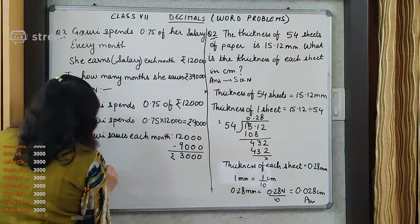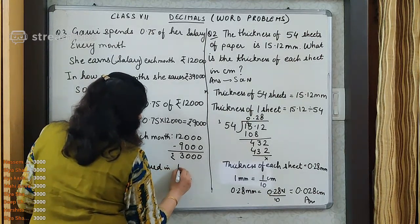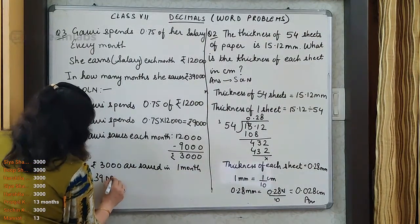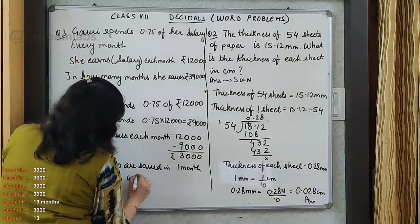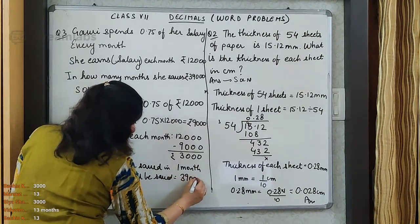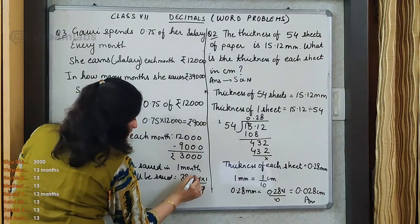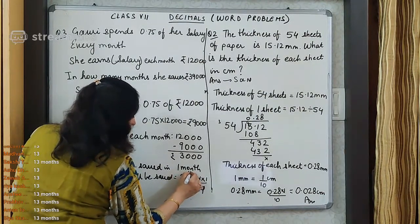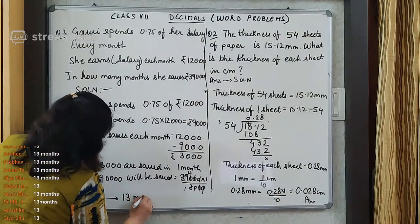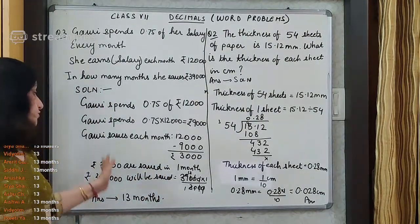Now the question is saying: if she saves rupees 3,000 each month, in how many months will she save rupees 39,000? So, rupees 3,000 are saved in one month. Therefore rupees 39,000 will be saved in 39,000 into 1/3,000. Cancelling the zeros and dividing, 39 by 3 is 13. So my answer becomes 13 months.